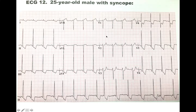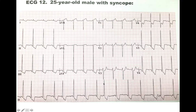Then you go ahead and scan the EKG. Looking at the lead 2 strip, I can appreciate some atrial premature complexes here, here, here, and here. So you can appreciate some atrial premature complexes on lead 2.